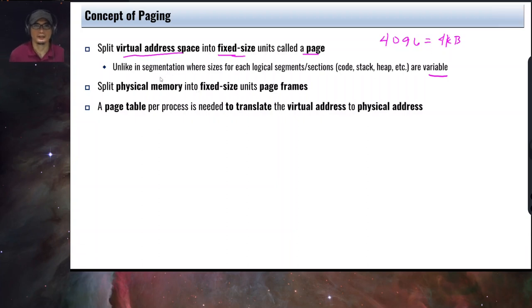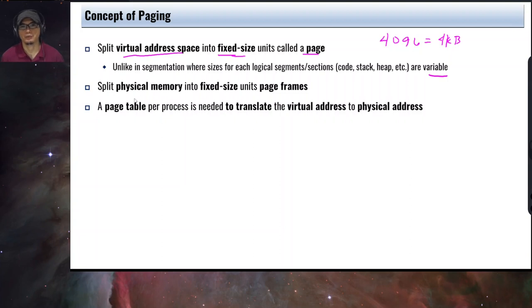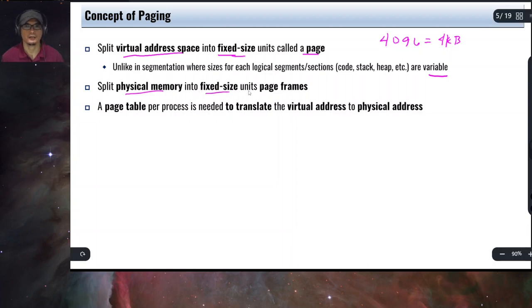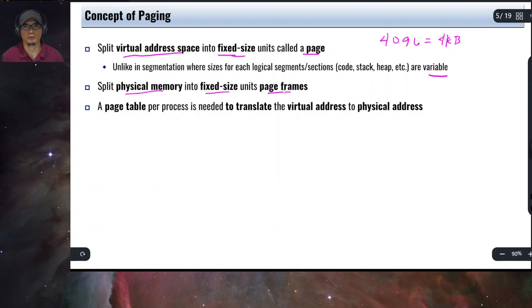In addition to splitting the virtual address space in the process, the physical memory is also split into fixed-size chunks, and we call these chunks page frames.